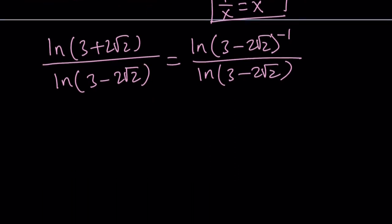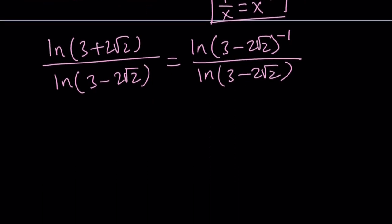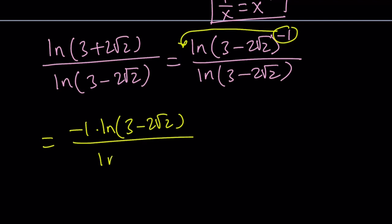But, by the log rule of exponents, we can go ahead and move this exponent to the front, right? We can go ahead and bring it to the front as a coefficient. So, this becomes negative 1 times ln 3 minus 2 root 2 divided by ln 3 minus 2 root 2.